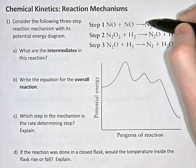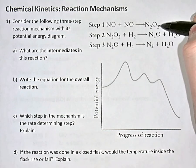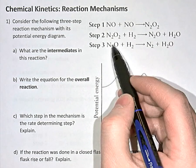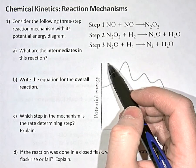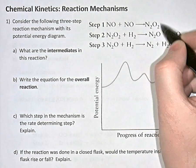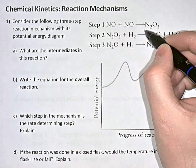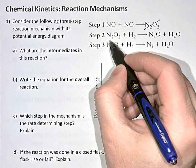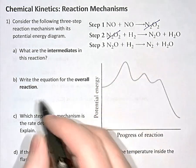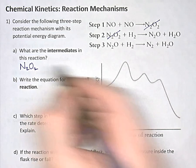So intermediates will appear on the right-hand side — the product side — of an early step in the mechanism, and then they'll be on the left-hand side as a reactant later on. We cancel them out in the mechanism. Here we see an N2O2 particle being produced, but in the very next step N2O2 is a reactant, so N2O2 is an intermediate.